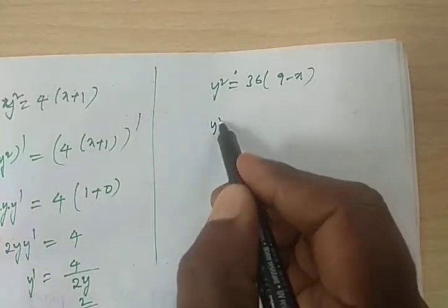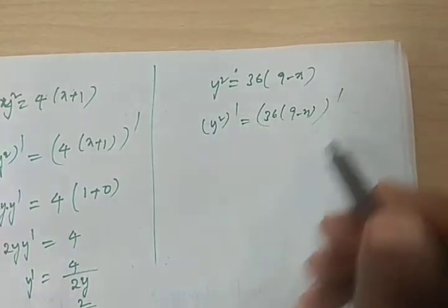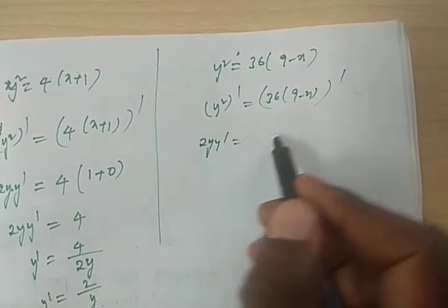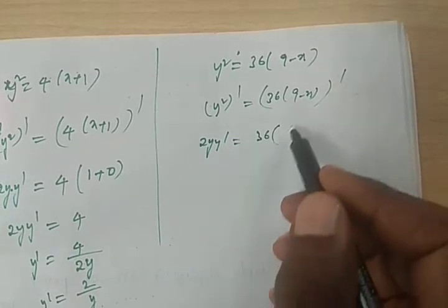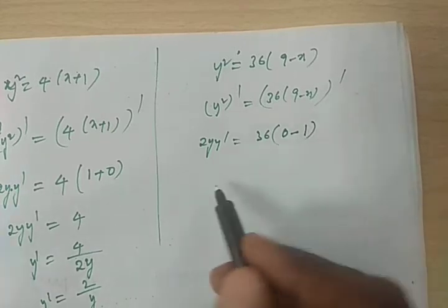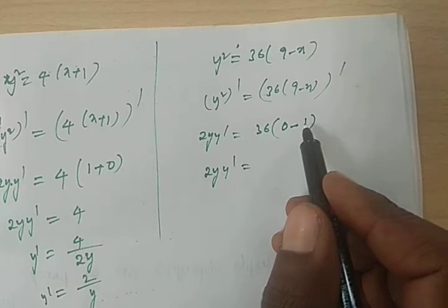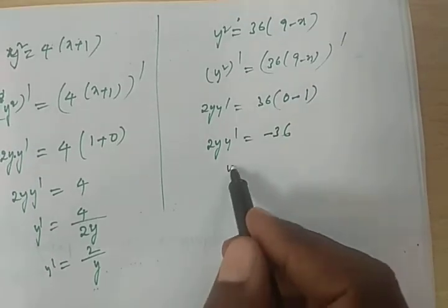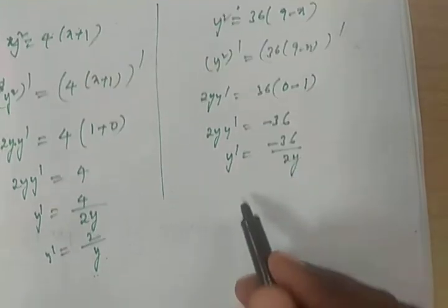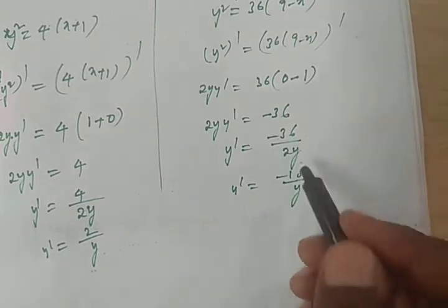Now differentiate the second curve y² = 36(9−x) with respect to x. So 2y·(dy/dx) = 36·(0 − 1) = −36. Therefore dy/dx = −36/(2y) = −18/y.